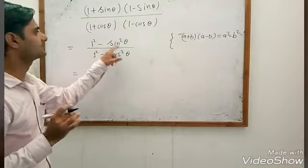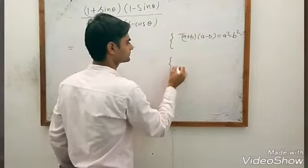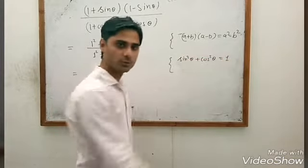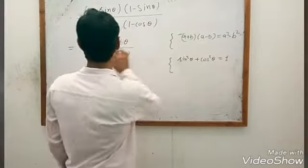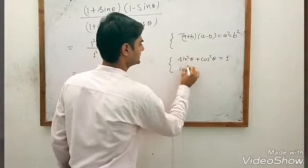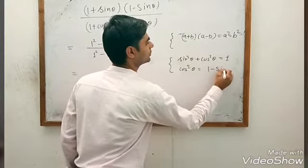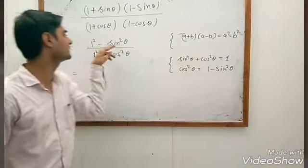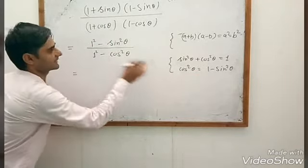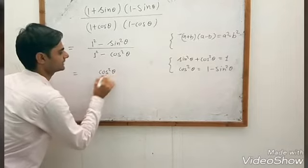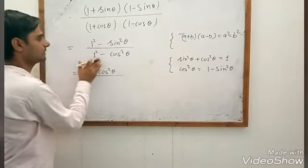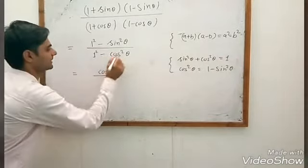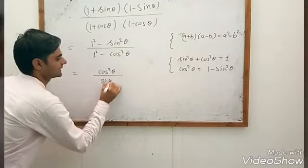So the numerator is 1 − sin²θ. We also know the identity sin²θ + cos²θ = 1, so cos²θ = 1 − sin²θ. We can put cos²θ in place of 1 − sin²θ. Similarly, 1 − cos²θ = sin²θ.